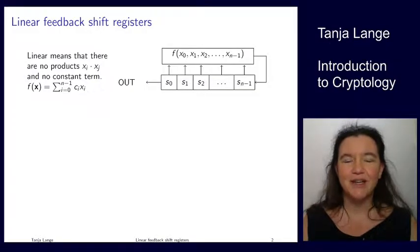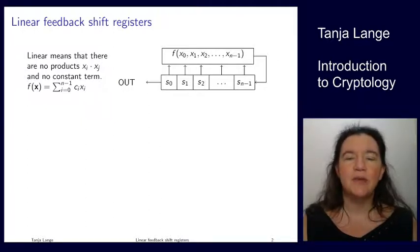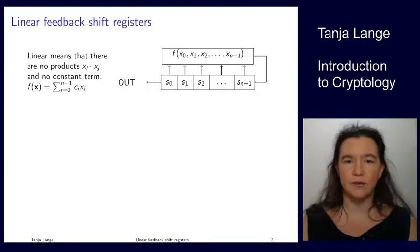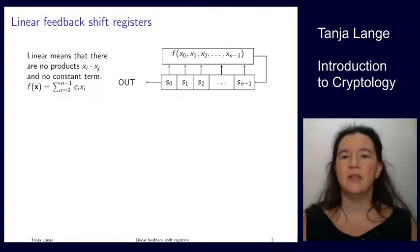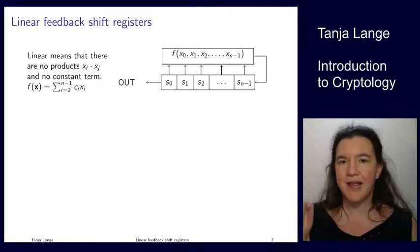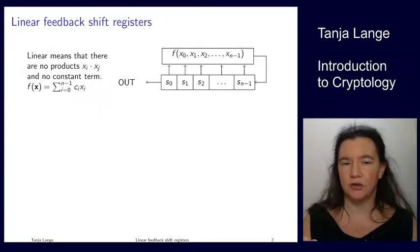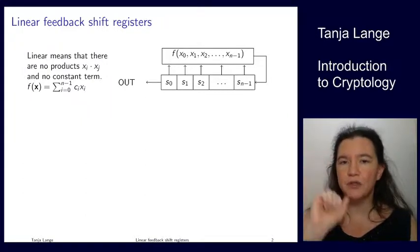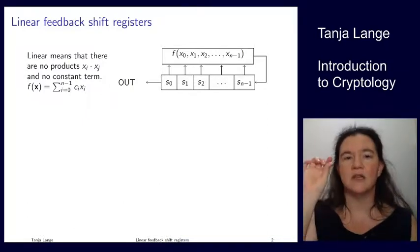In this lecture we're going to cover the specification of linear feedback shift registers. Linear means that we have a restriction on this function, namely that this function is only allowed to have linear terms. So there are no products, there are no constants. All that is allowed is the variables times some coefficients.